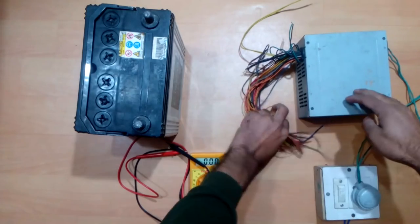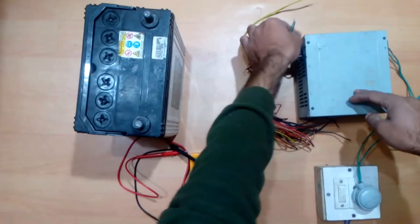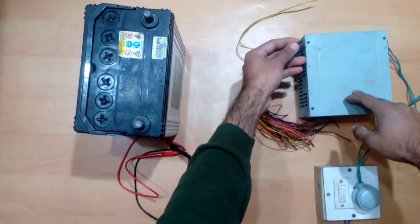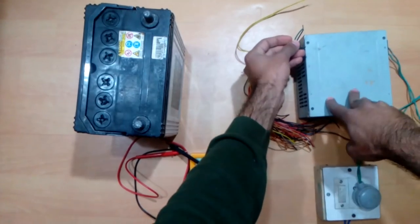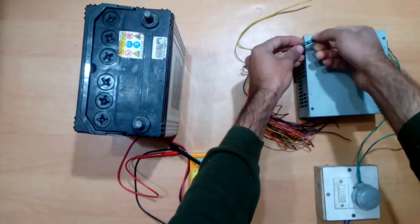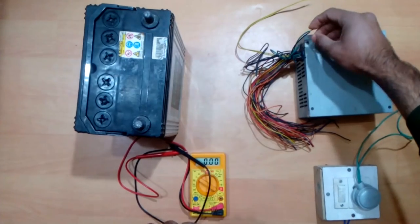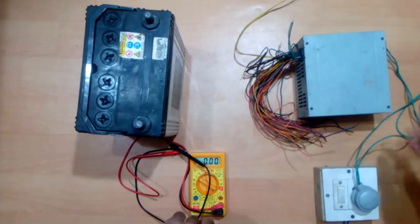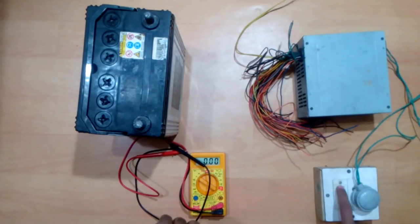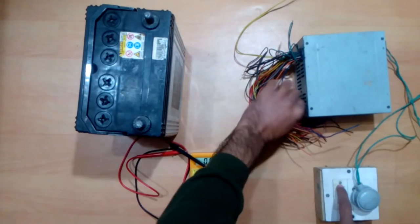To start the PSU without the motherboard, you need to find this green wire. I believe the color code they use on the wires is universal, so you will have a green wire that you need to attach to any of the black wires. You simply need to ground the green wire, that way if you supply current to the computer PSU it would start automatically.